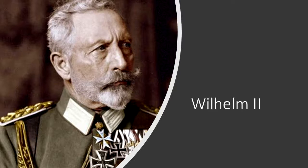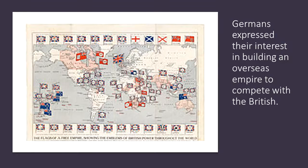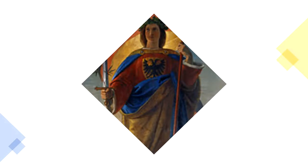Many Germans and some Britons felt that the ethnically related Germanic and Anglo-Saxon peoples were natural allies. However, the good relations between Prussia and Great Britain since the mid-18th century gave way after 1890 to a bitter Anglo-German rivalry. Several reasons explained this rivalry: both entities' commercial interests, since the Germans expressed interest in building an overseas empire to compete with the British, and German nationalism's belief that military power was essential to consolidate its role as a world power, something the British viewed as a menace.